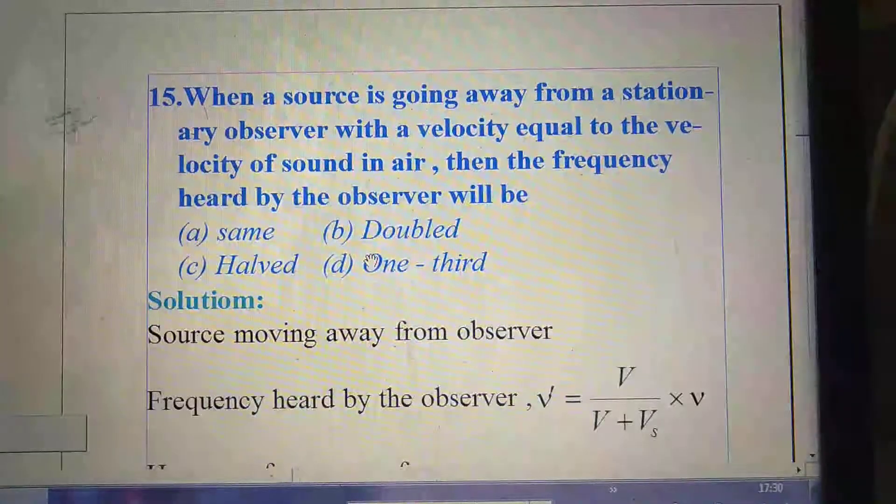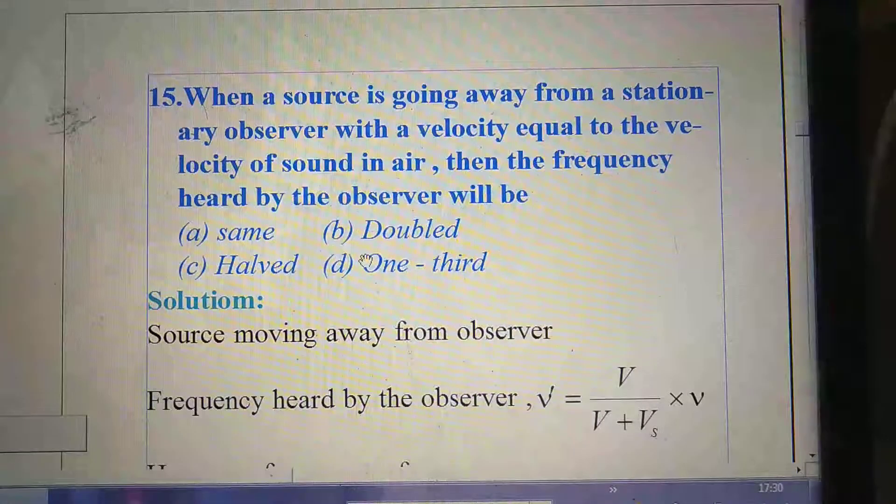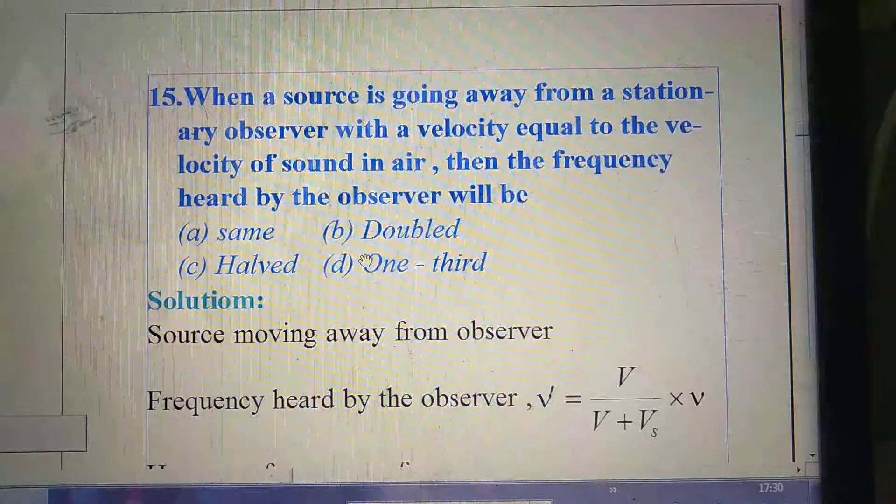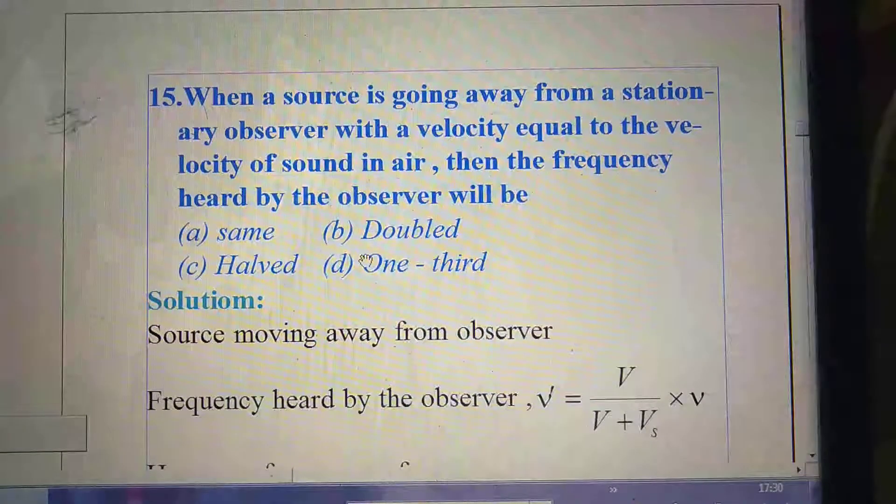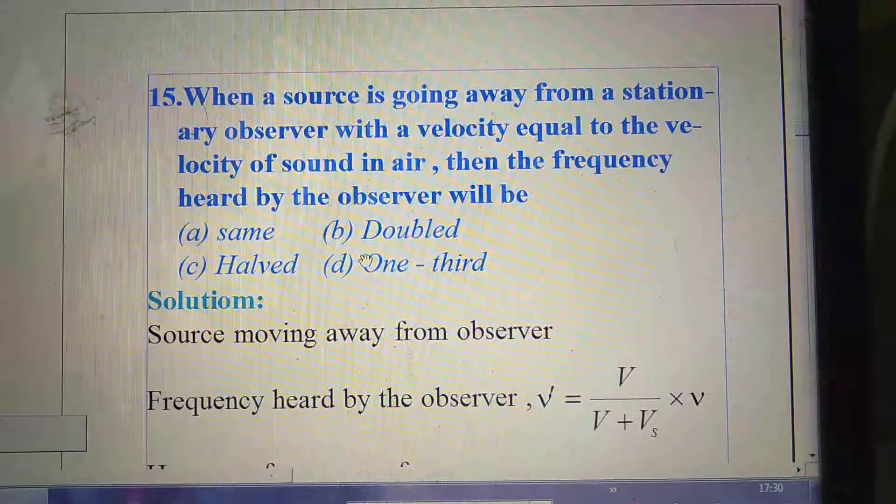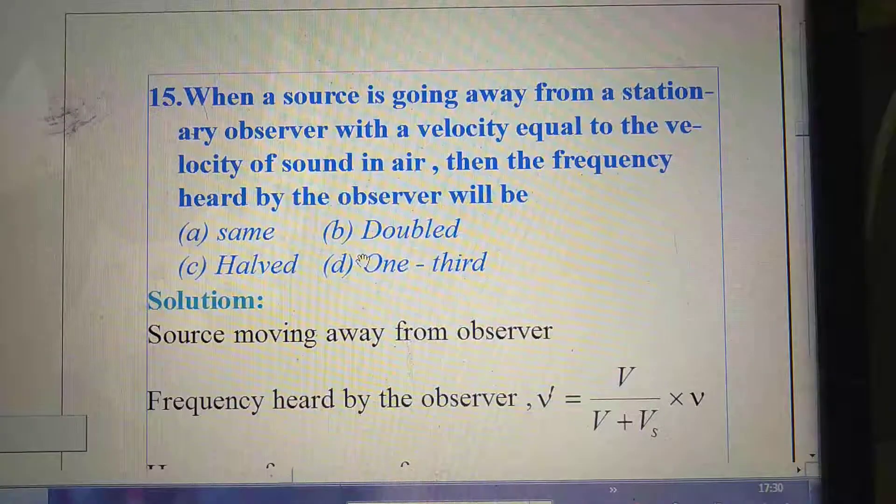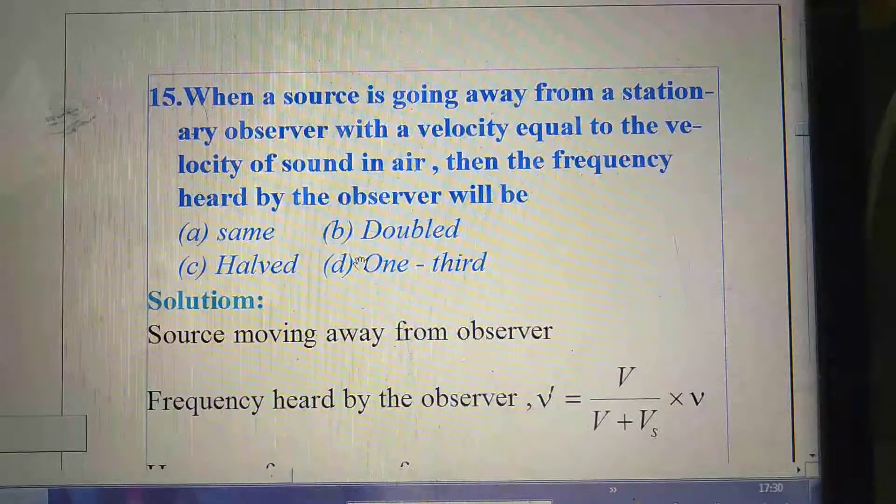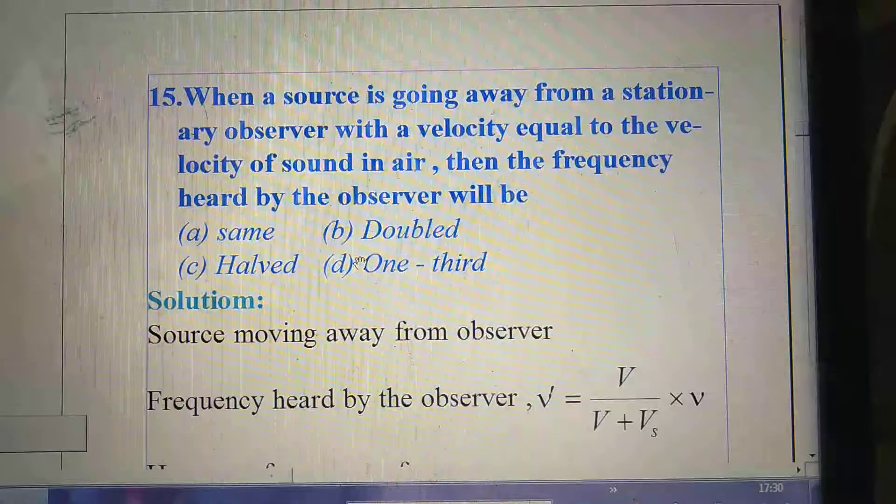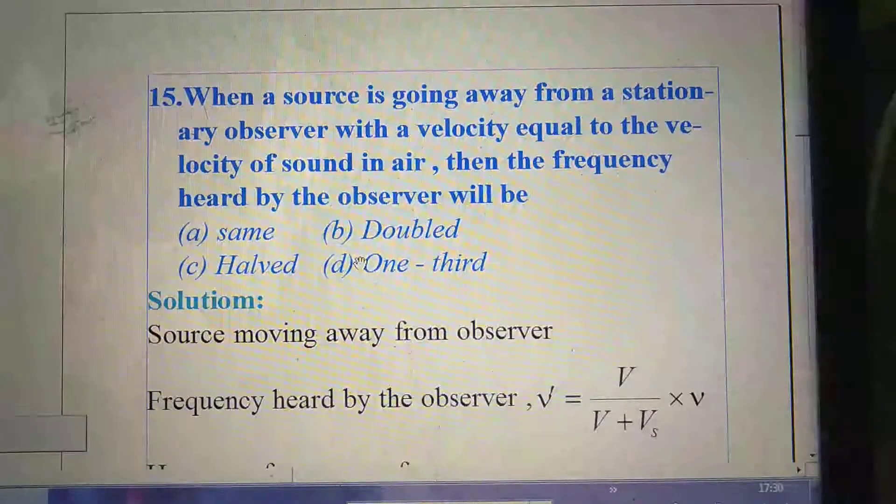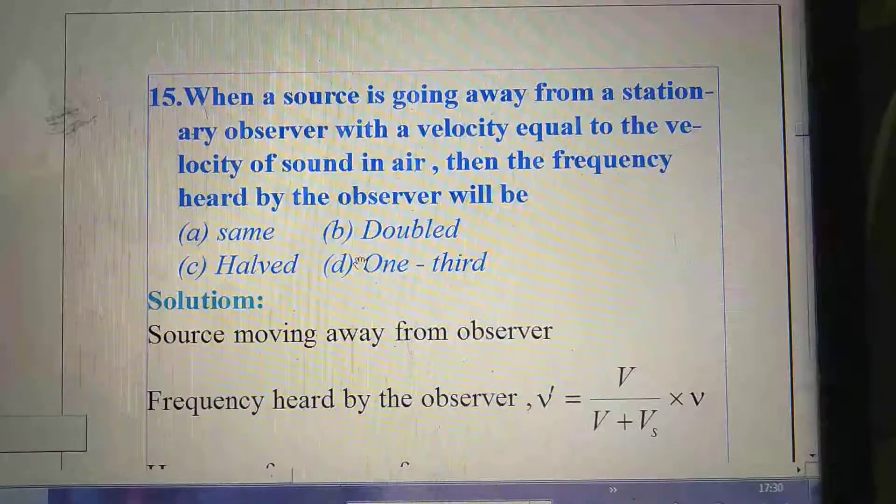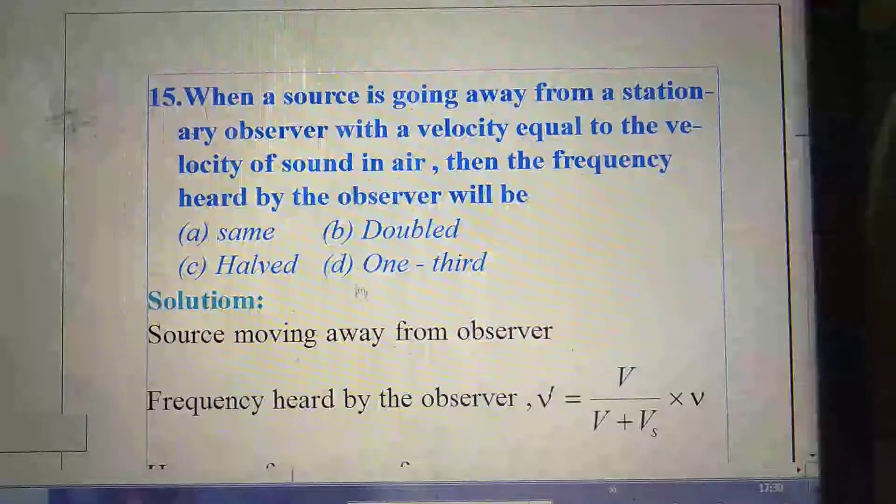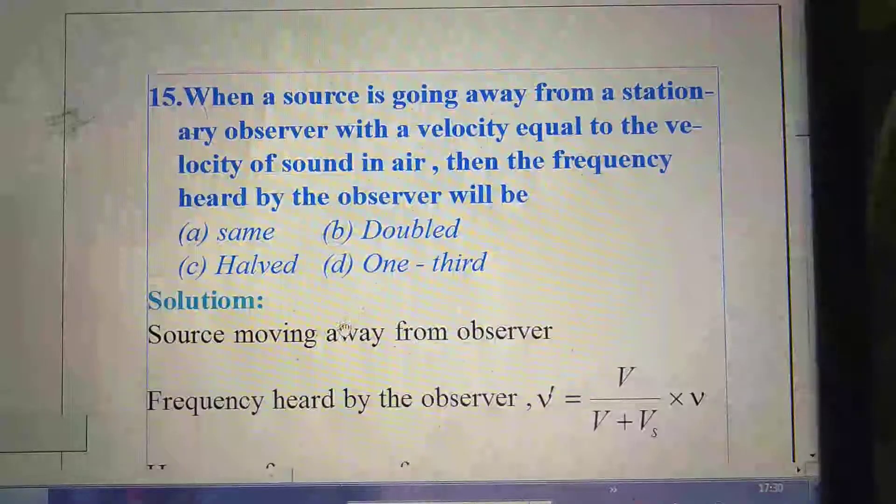Next question. When a source is going away from a stationary observer with the velocity equal to the velocity of sound in air, then the frequency heard by the observer will be option A same, option B doubled, option C halved, and option D one third.